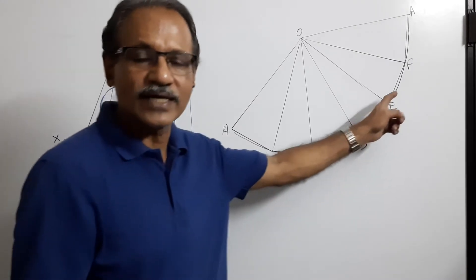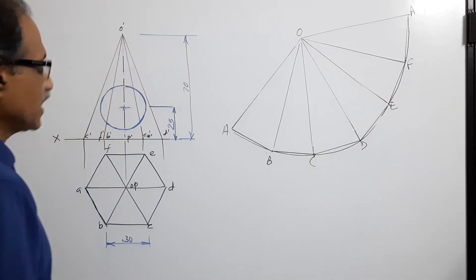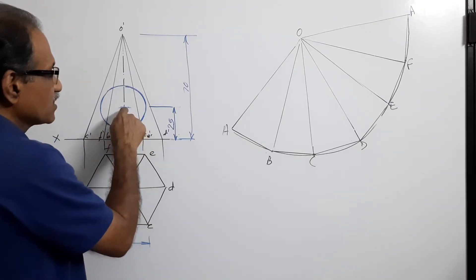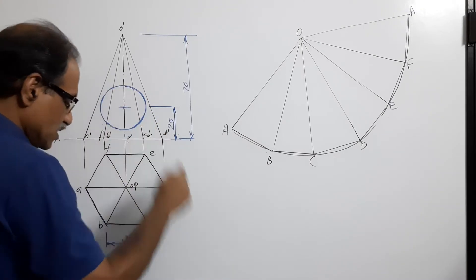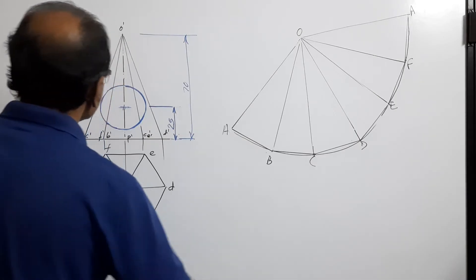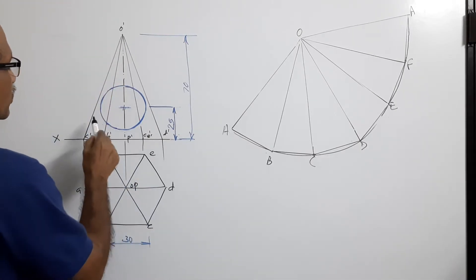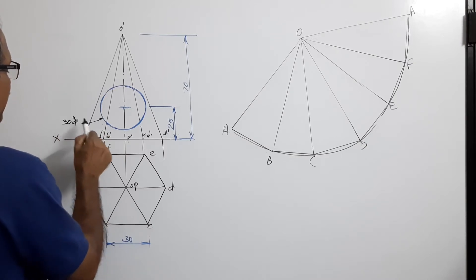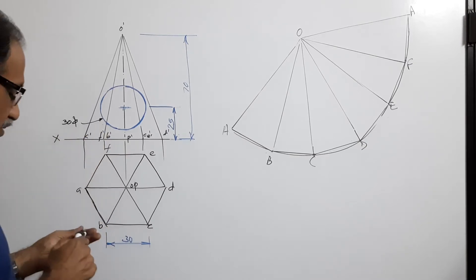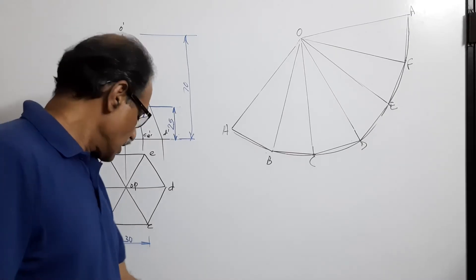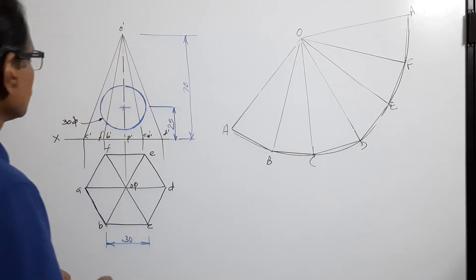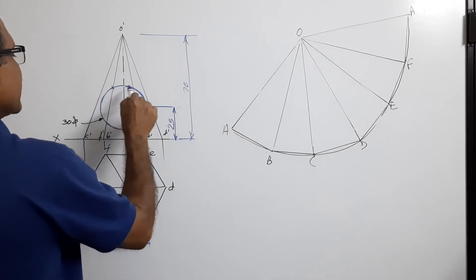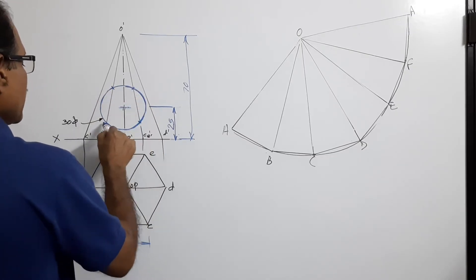Now locate a point 25 mm above the base and draw a circle whose diameter is 35 mm (30 mm diameter). Four points lie on the slant edges — one, two, three, four.